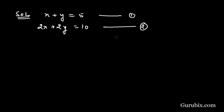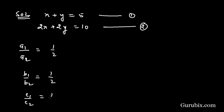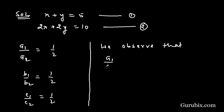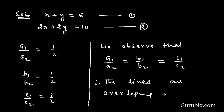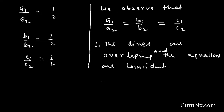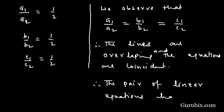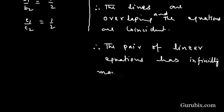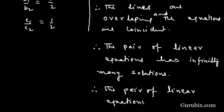Now we shall check whether this pair of linear equations is consistent or not. For that we check A1 over A2, which is 1 over 2; B1 over B2, which is also 1 over 2; and C1 over C2, which is also 1 over 2. We observe that A1/A2 equals B1/B2 equals C1/C2. This means the lines are overlapping and the equations are coincident, so the pair has infinitely many solutions and is consistent.